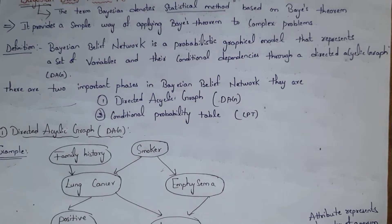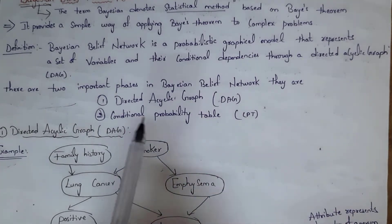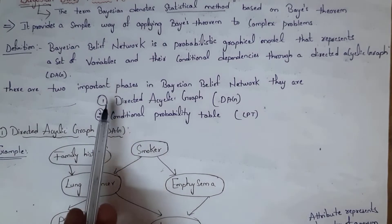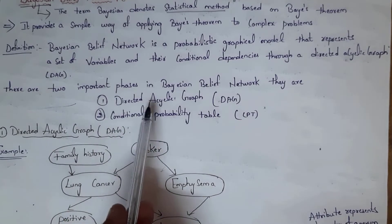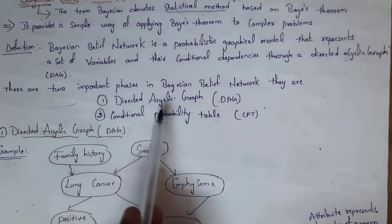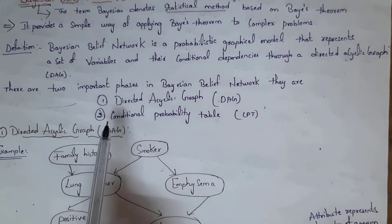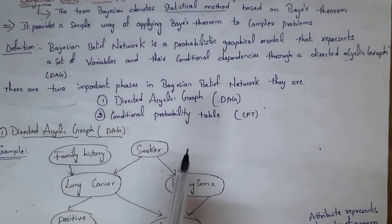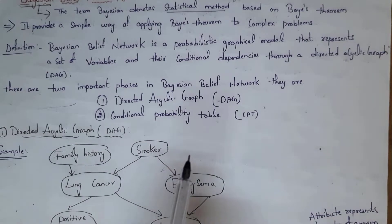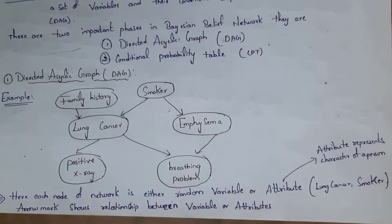There are two phases in a Bayesian Belief Network. The first is the Directed Acyclic Graph, shortly called DAG, and the next is the Conditional Probability Table, called CPT.